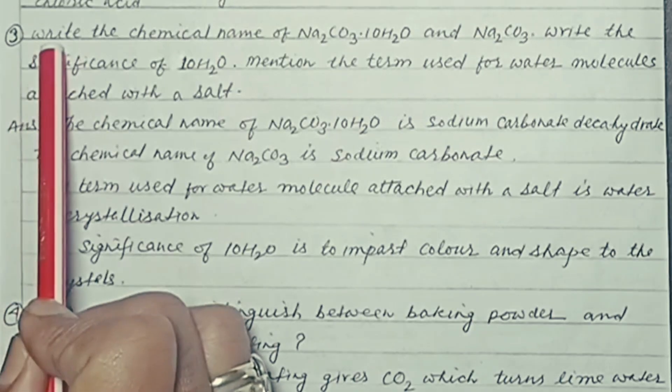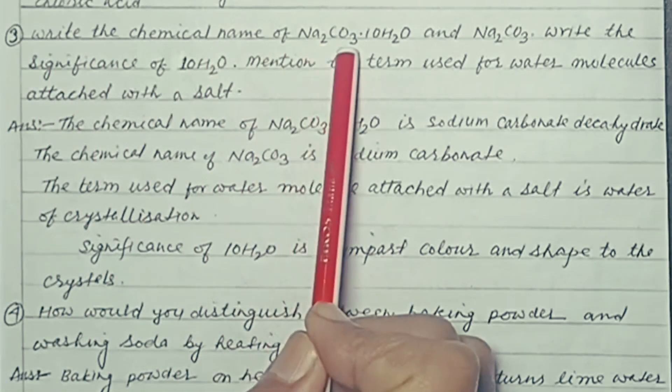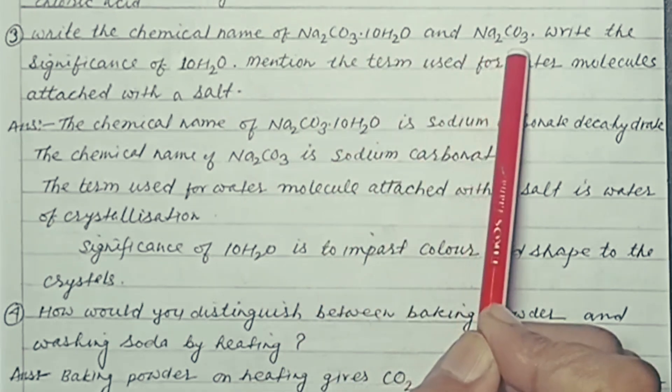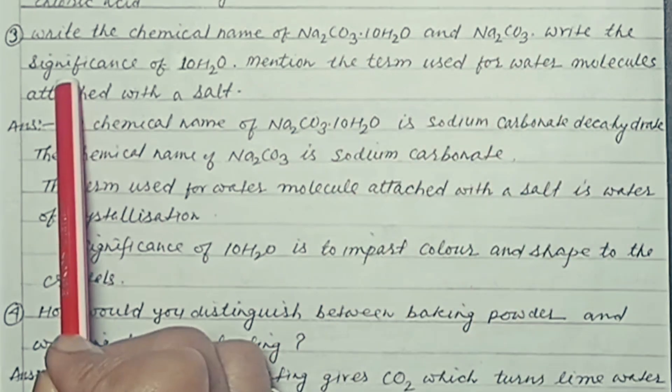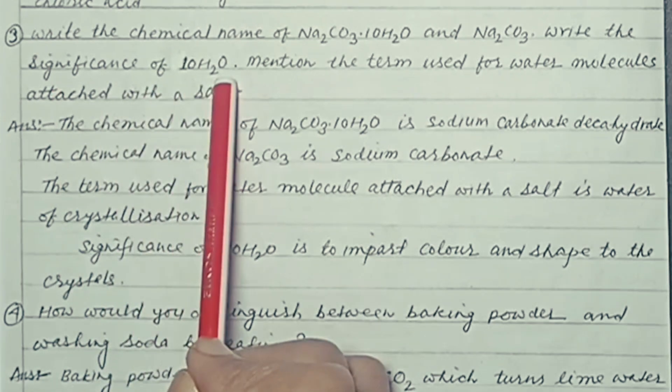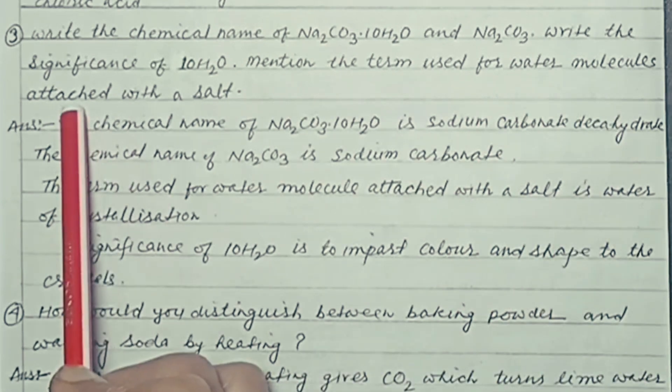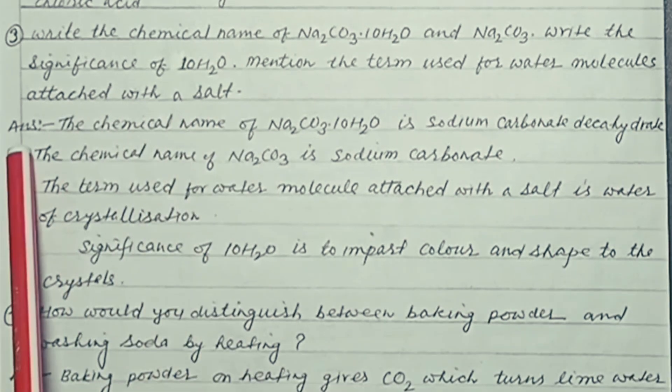Number 3. Write the chemical name of Na2CO3.10H2O and Na2CO3. Write the significance of 10H2O. Mention the term used for water molecules attached with a salt. Answer.